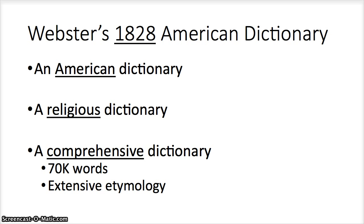The second point is that Webster's 1828 Dictionary was a religious dictionary. It was religious in that Webster wanted to help people understand religious language and understand the Bible. This is important because he's helping us understand how Americans in his time period would have used religious language, which means it helps us understand how Joseph Smith would have understood religious language. What a great resource for us.